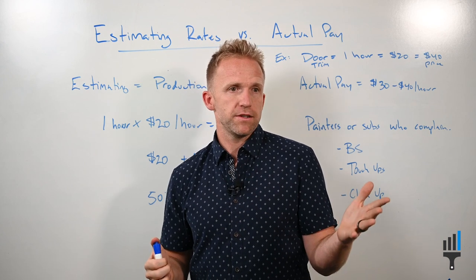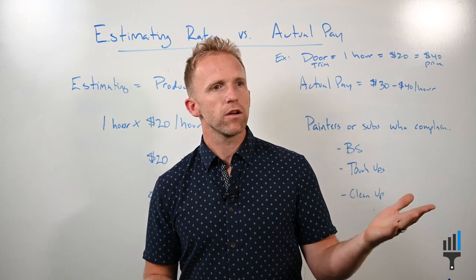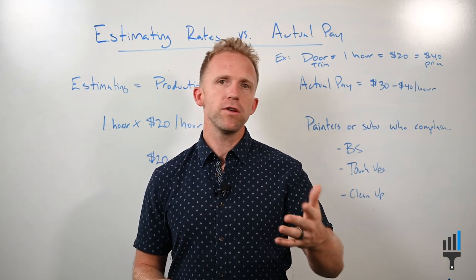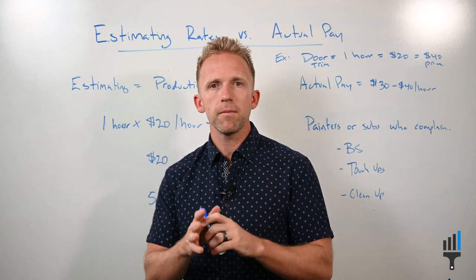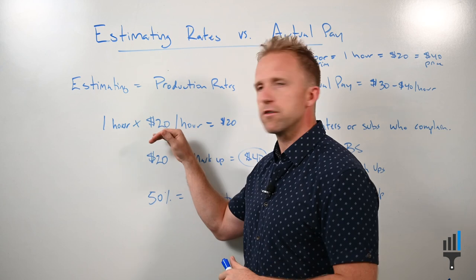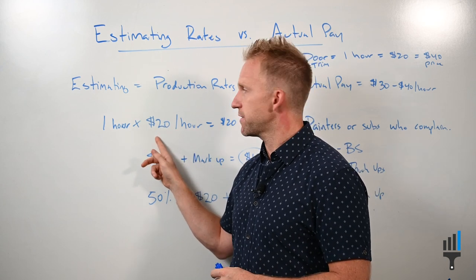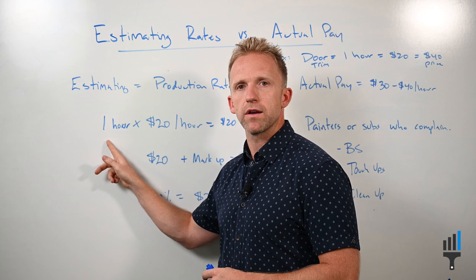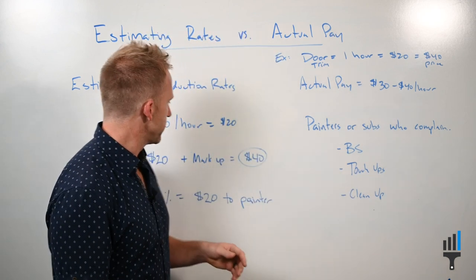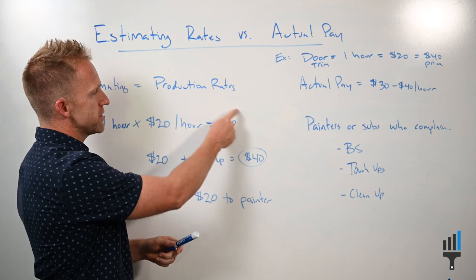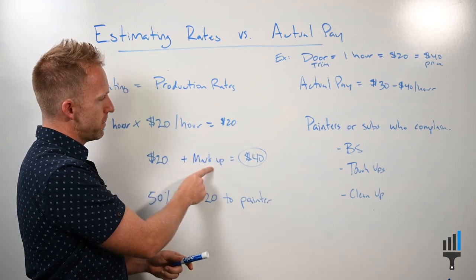That's the first place people get hung up - they say '$20 an hour is not fair, you need to pay more than that.' And I say, 'Well, I'm not paying $20 an hour - I'm estimating at $20 an hour for that hour of work.' So the next thing we do is say our cost for this job is $20.